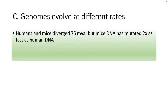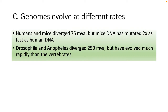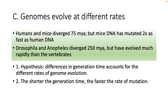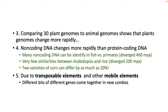Genomes evolve at different rates. Humans and mice diverged 75 million years ago, but mice DNA has mutated twice as fast as human DNA. Drosophila and mosquitoes diverged 250 million years ago but have evolved much more rapidly than vertebrates. The hypothesis is that generation time may explain different mutation rates — shorter generation time leads to a faster rate of mutation. Plant genomes change more rapidly than animal genomes. Non-coding DNA changes are more rapid than protein-coding DNA. Two varieties of corn can differ by as much as 20%.